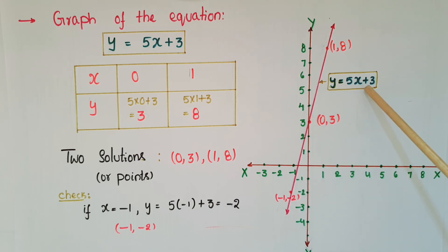This is y is equal to 5x plus 3 linear equation. So you can extend this line up to here, then you will get another point that is minus 1 comma minus 2. You can check if x is equal to minus 1 then y is equal to 5 into minus 1 plus 3, that is equal to minus 2. So this point is correct.